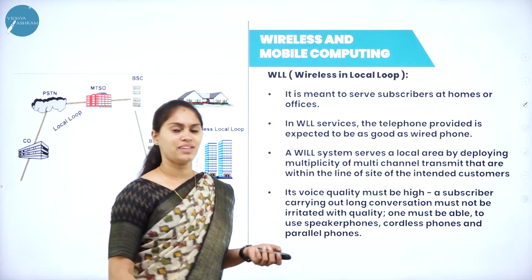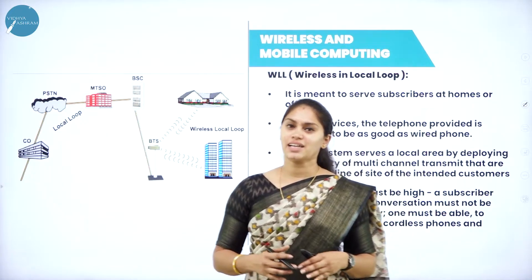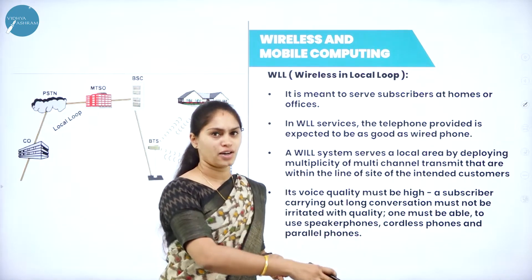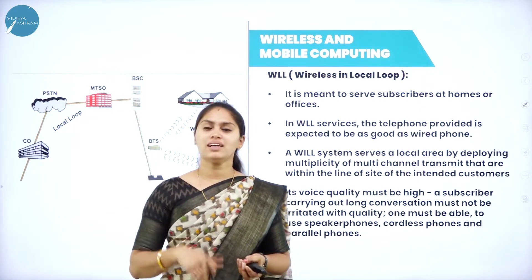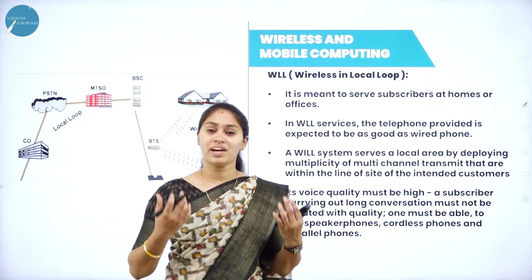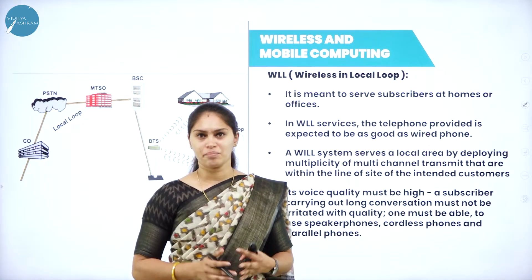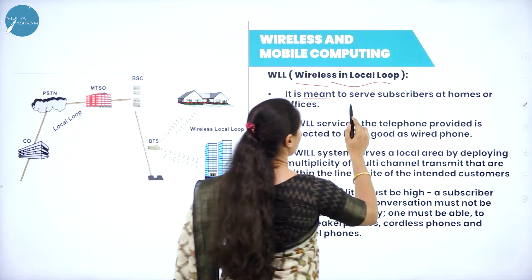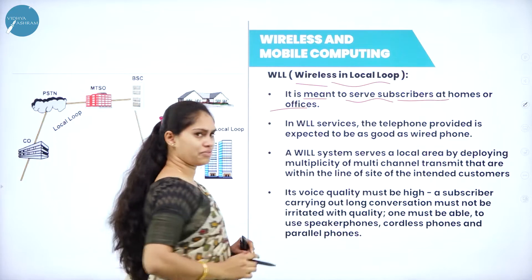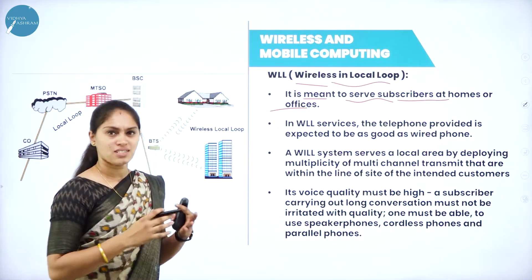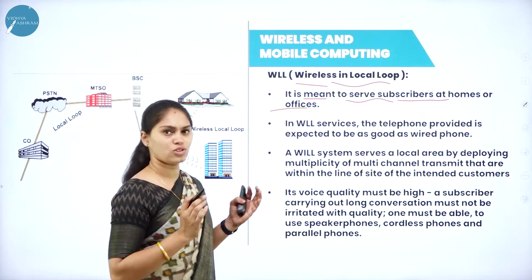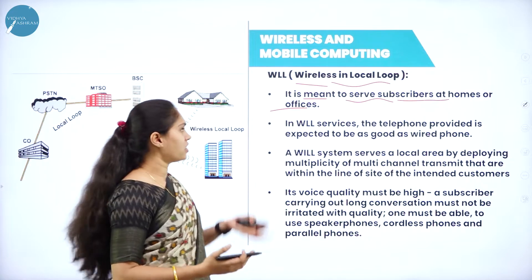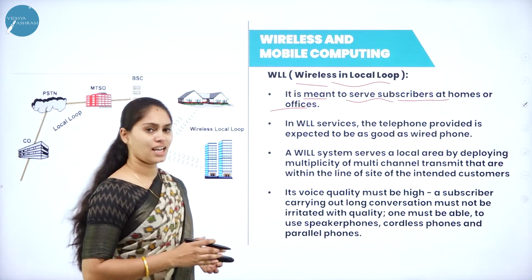Next is WLL — Wireless in Local Loop. Imagine you want an internet connection for your house. Instead of having a separate connection for each room or kitchen, you have a single wireless connection for the complete house or building. That technology is called WLL or Wireless in Local Loop. It creates a dedicated channel to serve the needs of subscribers present in a home, office, or particular building.